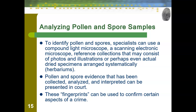To identify pollen and spores, specialists can use a compound light microscope, a scanning electron microscope, and reference collections consisting of photos, illustrations, or actual dried specimens arranged systematically — called herbariums. By getting a detailed look at a grain, we can compare it to known pollen and spore evidence to make a match. Pollen and spore evidence that has been collected, analyzed, and interpreted can be presented in court — it meets the Daubert criteria. While pollen or spore evidence is unlikely to be your slam-dunk piece of evidence, it is still used to solve crimes and does have value.